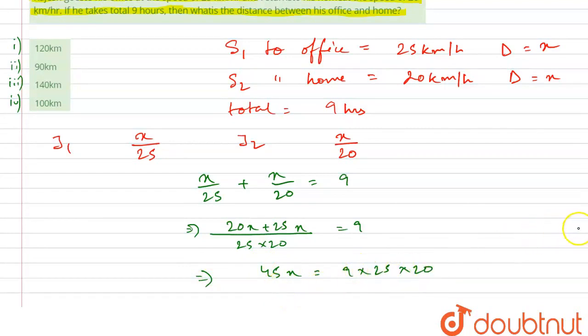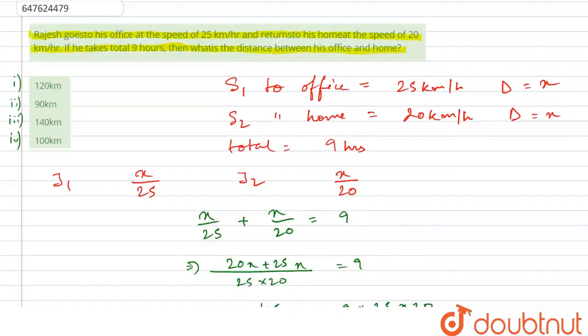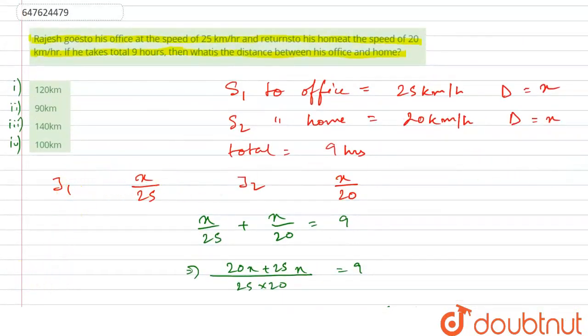So here we go. 45x equals to 9 into 25 into 20. So x value here, x equals to 9 into 25 into 20 divided by 45. 9 to 5, 5, 5, 5. So 100 kilometers total distance will be. So our option number 4 is correct answer. Thank you.